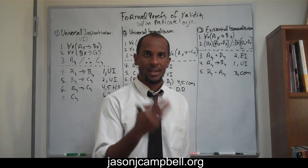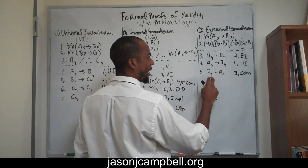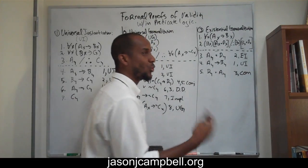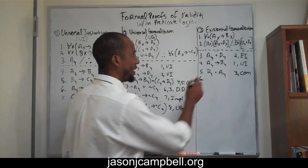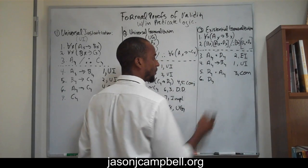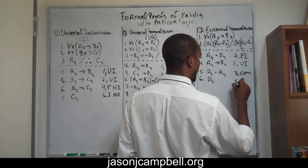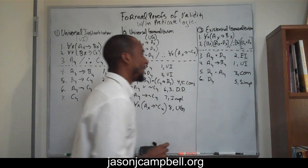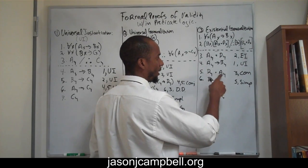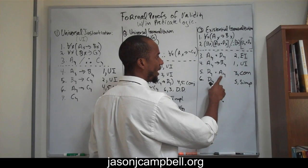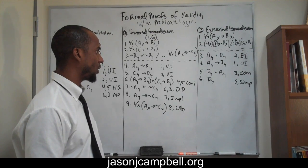All I'm doing is flipping Dy and Ay so that I have Dy on this side and Ay on that side. Using the next rule on line six, I can get Dy by itself, which is what I need. And how did I get Dy? I used simplification on line five — if I have P and Q, I can simplify and get one by itself.